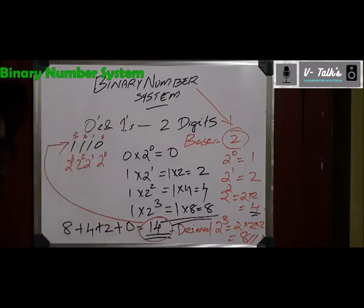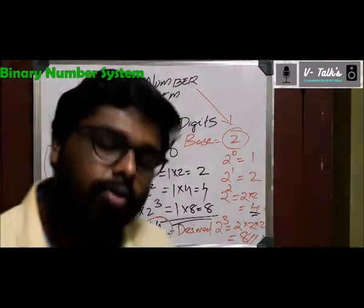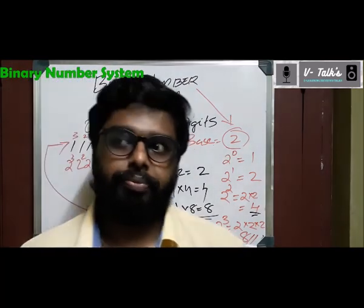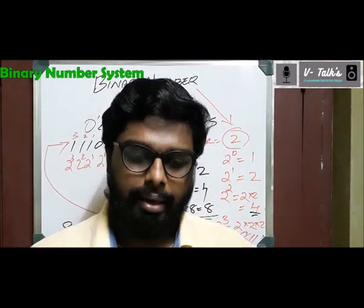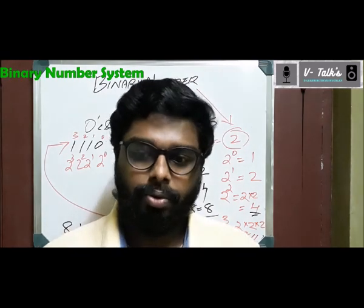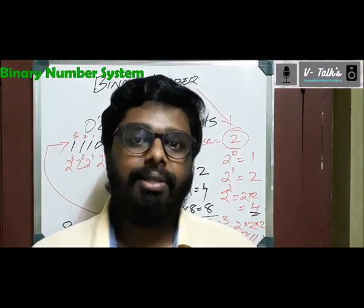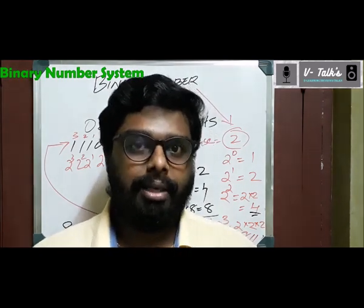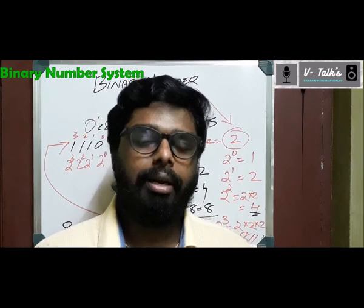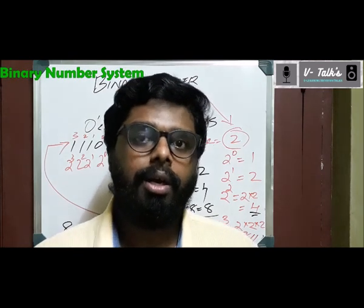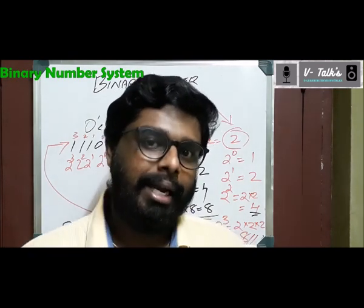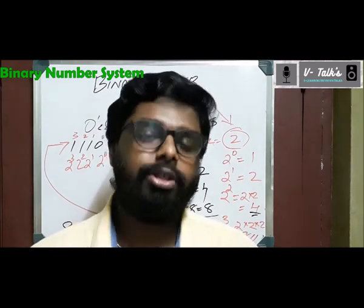When binary 1110 is converted, it reads as 1, 1, 1, 0. Anything you give inside a computer — like if you type a key such as A, B, C, D — it is also represented as numbers inside the computer. I will show you how that works in the next class. This is the binary number system.